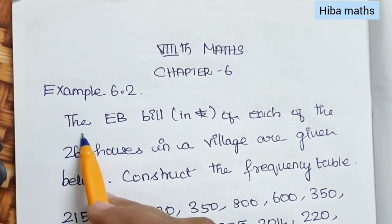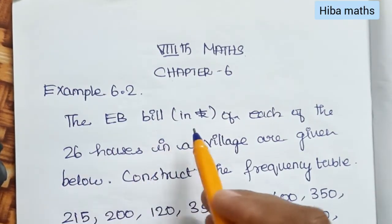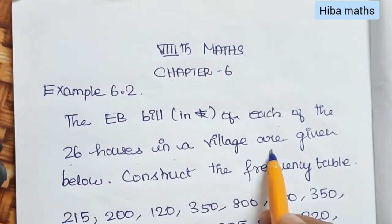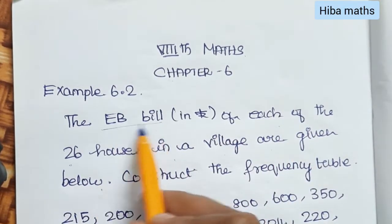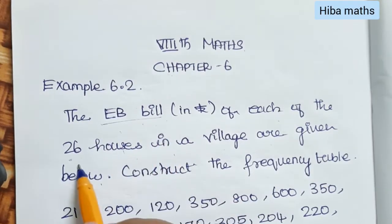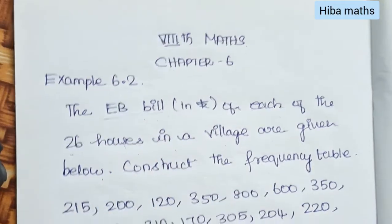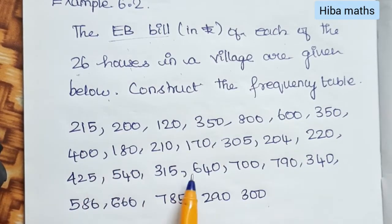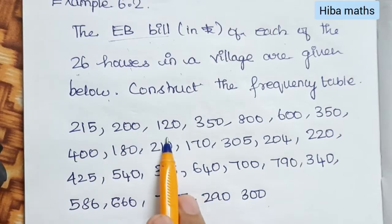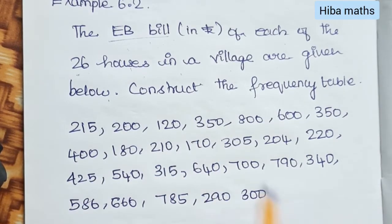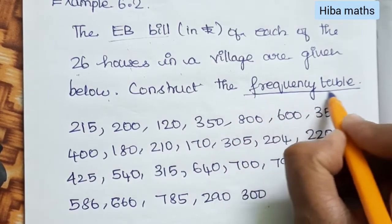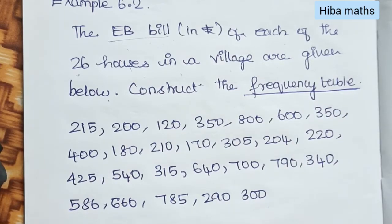Example 6.2: The EB bill in rupees of each of 26 houses in a village are given below. EB bill is the electricity current bill, and we have to get the readings — 215, 200, 120, and so on. Here we have to construct a frequency tally table.